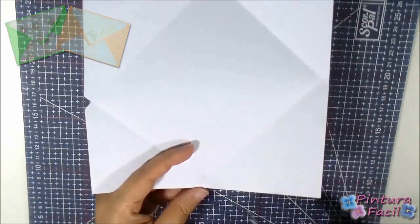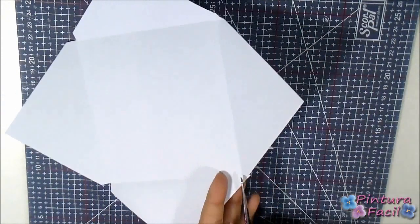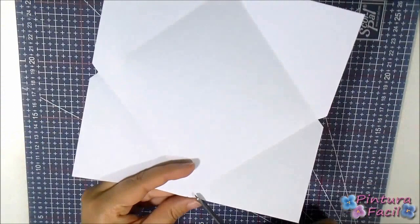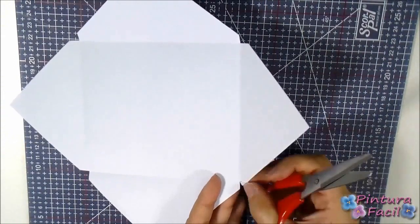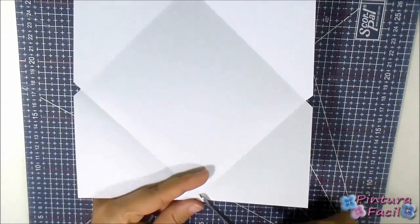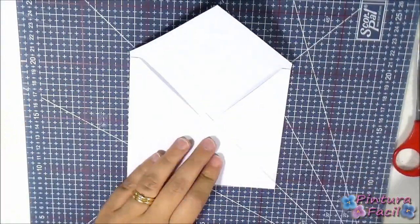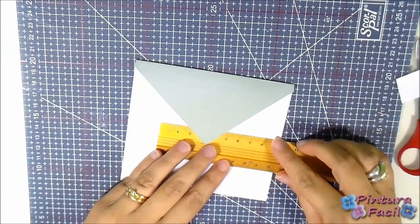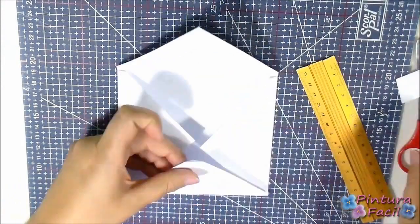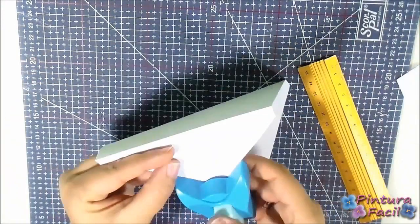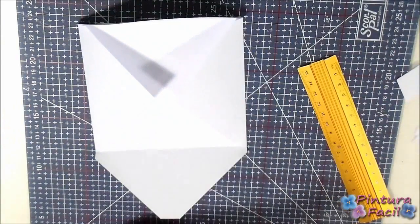Fold the envelope using the marks and then cut the leftover triangles. Using a ruler, fold the leftover lower flap and cut it. Round the top flap and then glue the envelope borders.